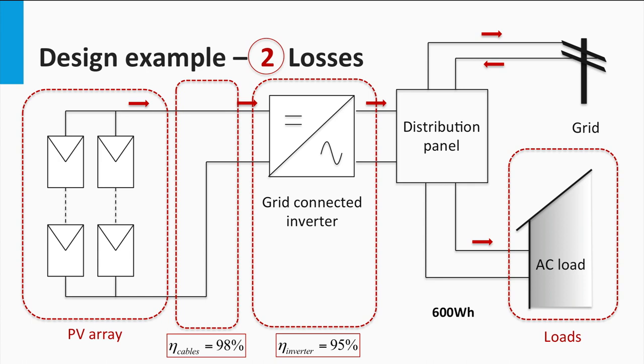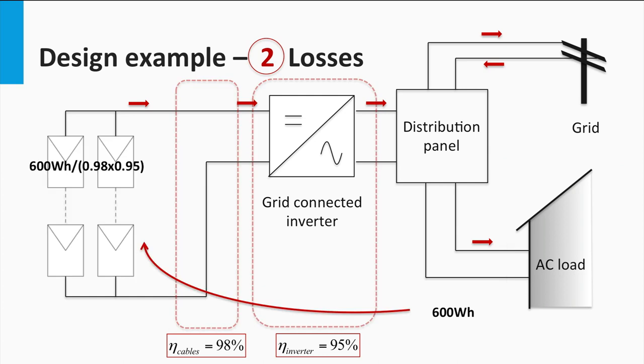Here we assume the same component efficiencies as we saw in the earlier example. That is, the cables have a transmission efficiency of 98% for the DC power, and the grid-tight inverter shows an efficiency of 95%. We also see that the AC load at the inverter end demands a total of 600 Wh during the day. Given the system component efficiency, we can then calculate the equivalent energy required from the PV panels as shown. This is basically the transposition of the energy before all these losses occur. Therefore, the total energy requirement for the PV array is 644.5 Wh.